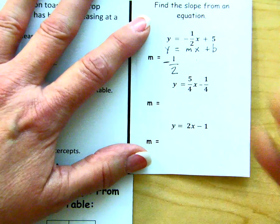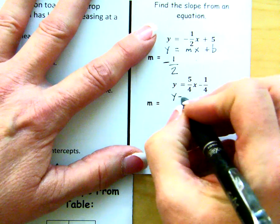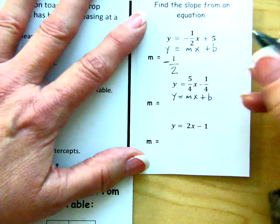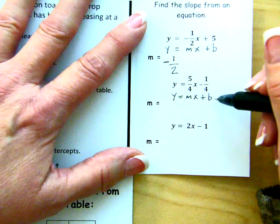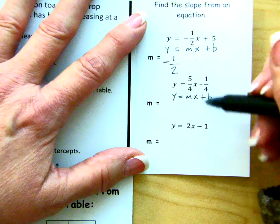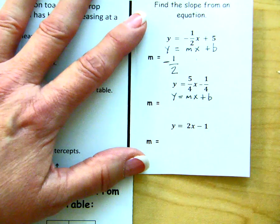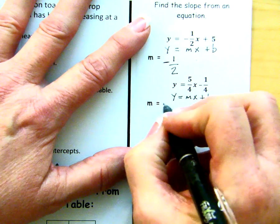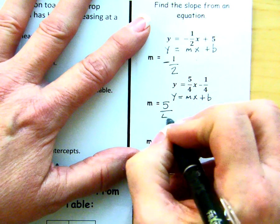From this second equation, again, we've got y equals mx plus b. We're not really worried about the y-intercept at this point. We're focusing on slope. Slope is always the number in front of the x once you have put it into slope-intercept form or solve for y. The slope in this case is 5 over 4.